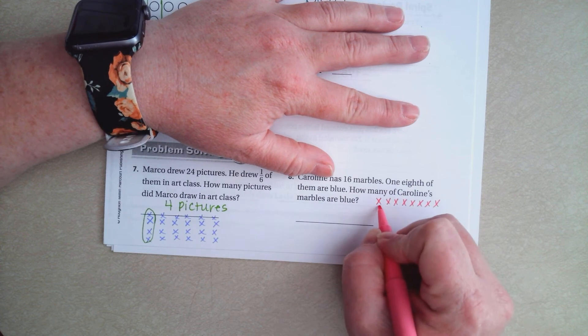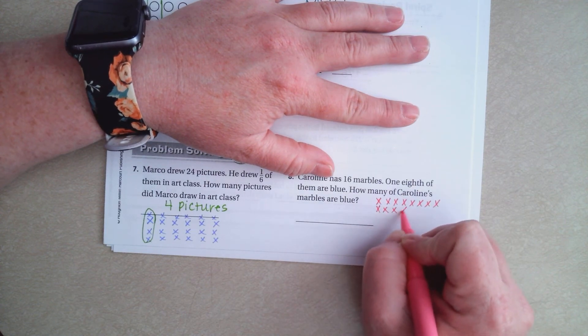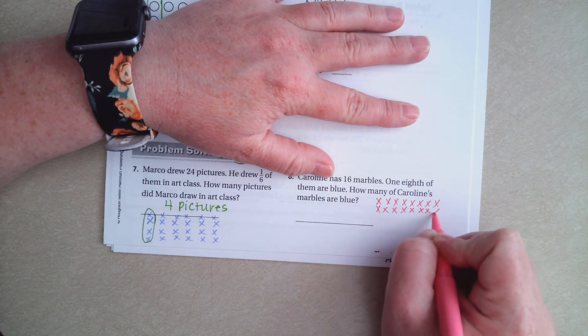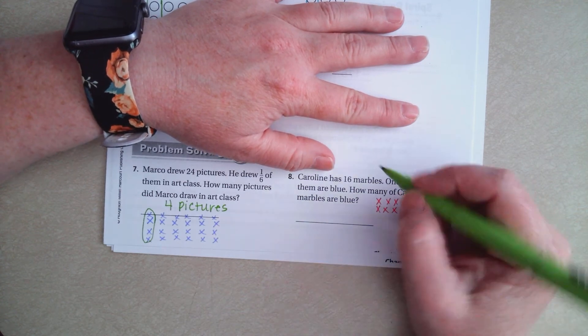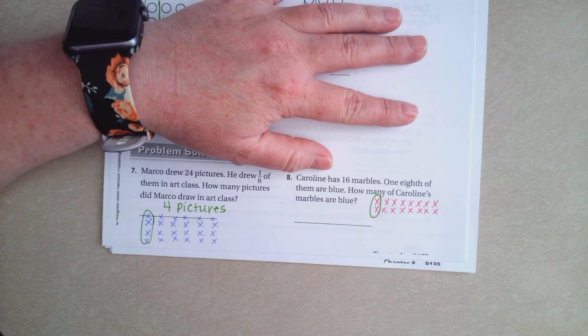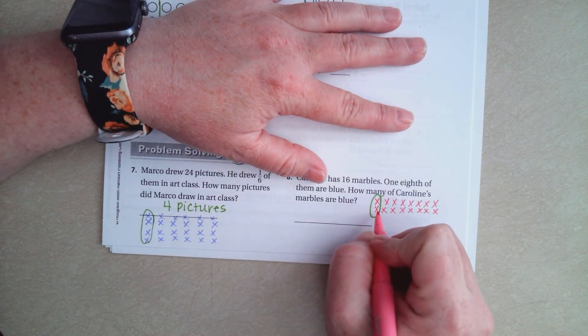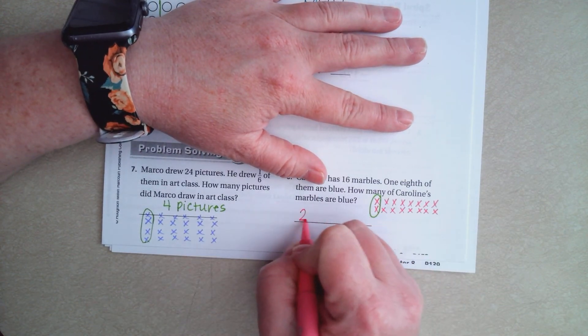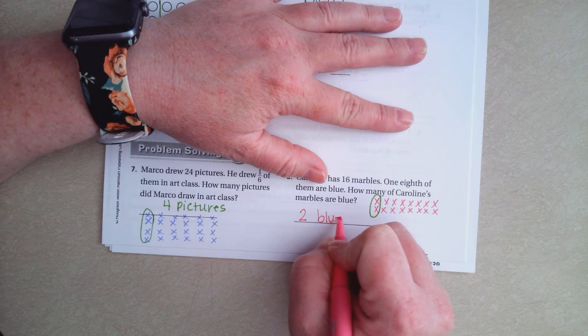We need to get to 16. So 9, 10, 11, 12, 13, 14, 15, 16. Now we're at 16. So 1/8 of them are blue. How many are blue? Well, how many are in there? 2. 2 blue marbles.